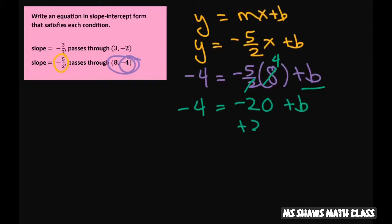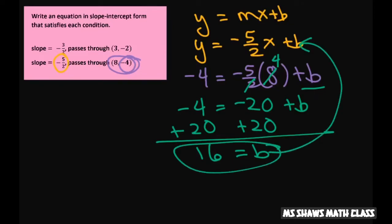Add 20 to both sides of the equation, and we get 16 equals b. So we plug 16 back into that b, and you're left with y equals negative 5 halves x plus 16.